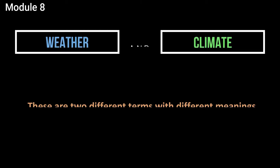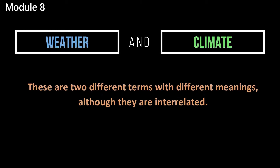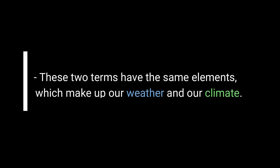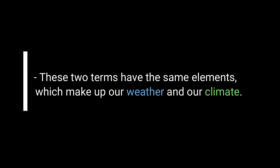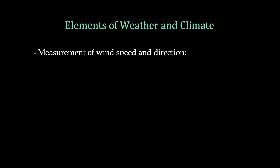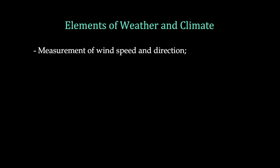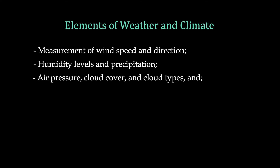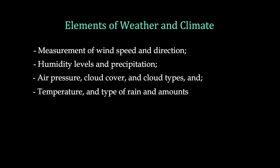Weather and climate are two different terms with different meanings, although they are interrelated. These two terms have the same elements which make up our weather and our climate. The elements of weather and climate include measurement of wind speed and direction, humidity levels, precipitation, air pressure, cloud cover, cloud types, temperature, and type of rain and amounts.